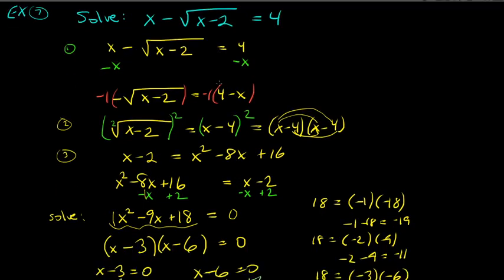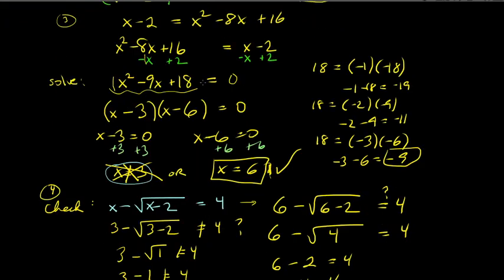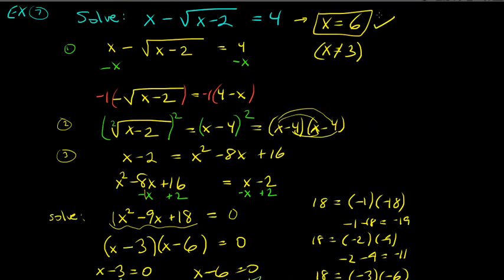To summarize: the original problem had two candidate solutions — x equals 3 and x equals 6. X equals 3 was extraneous and did not work. X equals 6 did work. So the equation has exactly one solution: x equals 6.